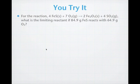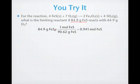All right. So you're done with the calculations, hopefully. Now let's take a look at how we go through this. First thing we want to do is let's find out how many moles of iron 2 sulfide we have. So iron 2 sulfide, 84.9 grams times one mole over 90.62 grams of iron sulfide. The grams cancel out and leave us with 0.941 moles of iron 2 sulfide.